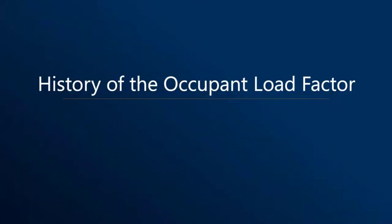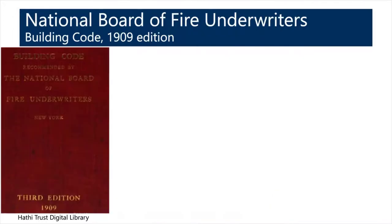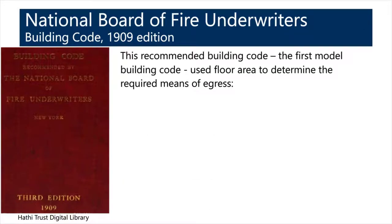Understanding the history of the occupant load is important for designers to justify which occupant load factor to use. Going back through codes: the Uniform Building Code 1935, Standard Building Code 1950, and early model building codes all tried to address this topic. The National Board of Fire Underwriters Building Code — the first model code in the US, established in 1909 — used floor area to determine required means of egress, requiring additional exit stairs every 5,000 square feet.